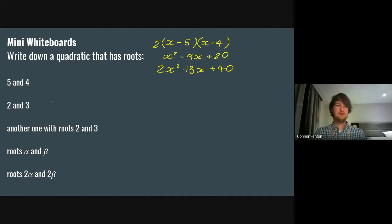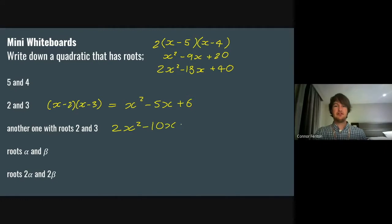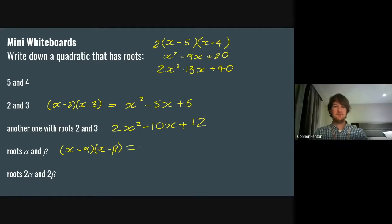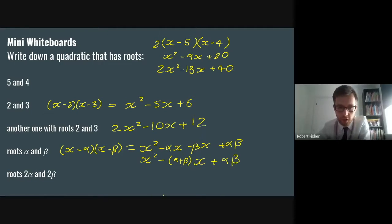Let's go through the answers. For roots two and three, we could have (x − 2)(x − 3), which is x² − 5x + 6. If we wanted a different one, we could just double everything to get 2x² − 10x + 12. What do you think I'm going to do when I don't know the actual numbers? Instead of using two and three like before, you just write it with alpha and beta — they're the Greek letters for A and B. So expanding (x − α)(x − β) gives x² − αx − βx + αβ, which I can combine to x² − (α + β)x + αβ.